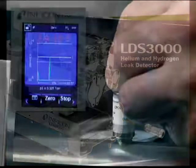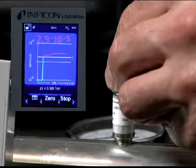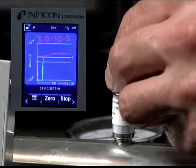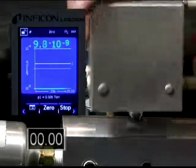With the unit tuned to hydrogen, the sniffer captures a direct reading on the leak that we will use for this demonstration. The direct leak rate is approximately 3.0 times 10 to the minus 5 cc's per second of hydrogen.